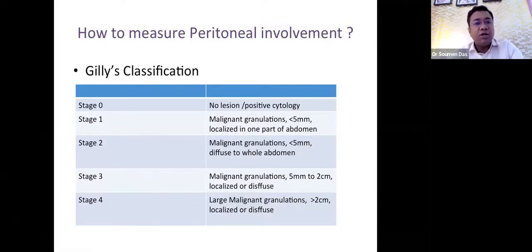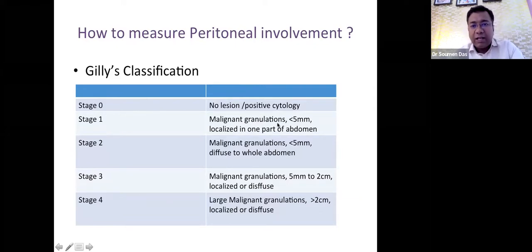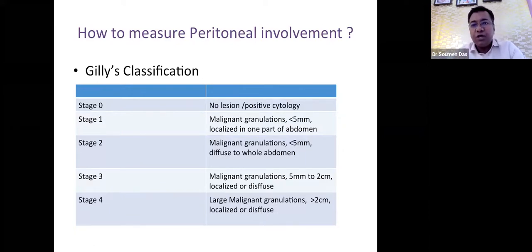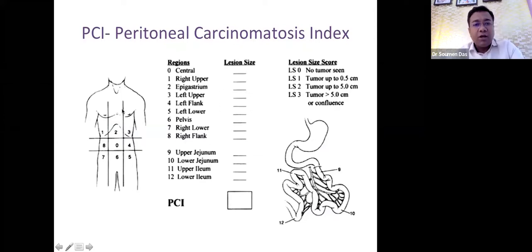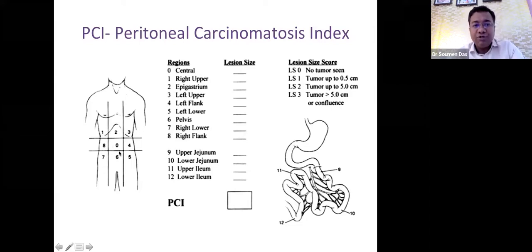Previously, a staging system divided peritoneal disease into stages 0–4 based on tumor size (less than 3 mm, 5 mm to 2 cm, or more than 2 cm), ascites, and whether disease is localized or diffuse. Nowadays, the Peritoneal Carcinomatosis Index (PCI), proposed by Professor Paul Sugarbaker, is used worldwide. After laparoscopy or laparotomy, the abdomen is divided into 9 regions — from the umbilicus as region 0, with stations 1 through 8 — similar to the 9-region clinical division.